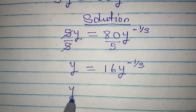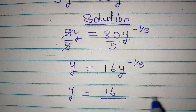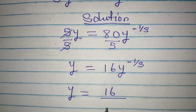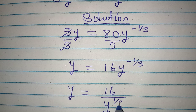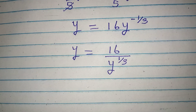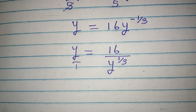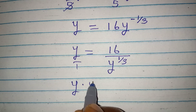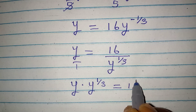From here, this is the same thing as y being equal to 16 over — because of this negative, everything that has to do with y will go down. So we have y to the power of 1 over 3, but the negative has gone. Now the next thing is to cross multiply, because this is over 1 as well. So we have y multiplied by y to the power of 1 over 3 equal to 16.